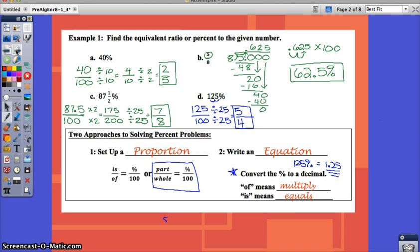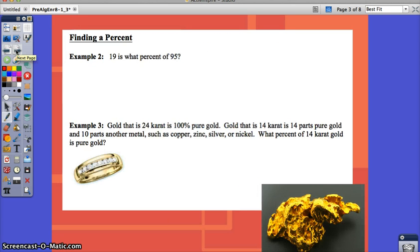So let's try this. We're going to solve example two using both methods. I want you to make sure you write down both methods here so that you can have this to look back to, to study from. Like I said, I prefer the proportion, but the equation is a good option too, so I want to make sure you have both.